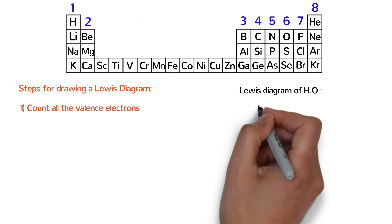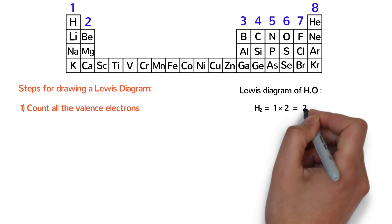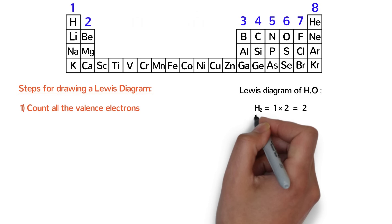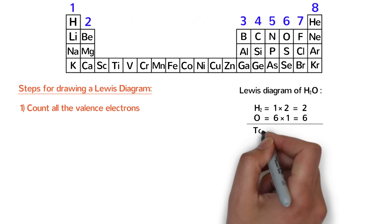First, count all of the valence electrons in the molecule. For water, each hydrogen has one electron and we multiply that by two because there are two hydrogens in the molecule. The oxygen has six valence electrons. Add those all up and we have a total of eight valence electrons for the water molecule.